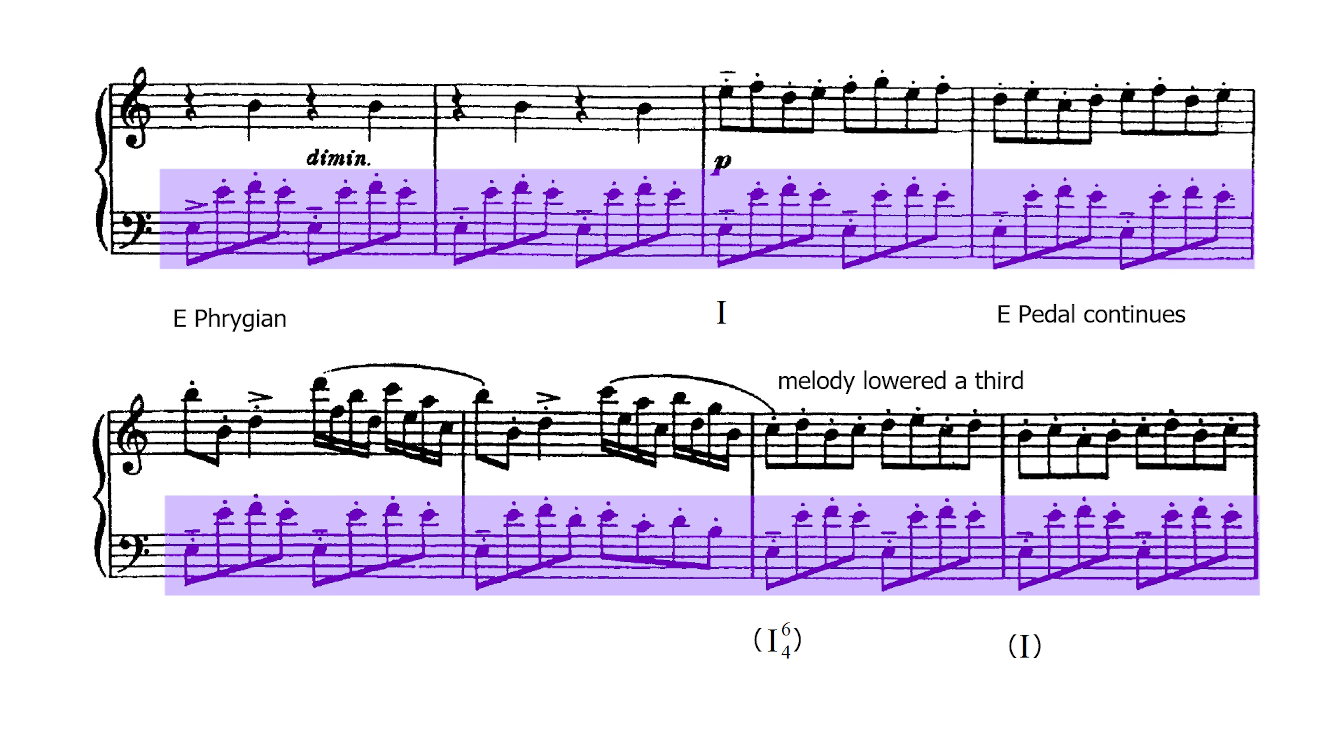Prokofiev introduces an Alberti bass-like accompaniment and a new melody. Notice how he creates contrast with the A section by indicating every note to be played in staccato. There is not a single note in the A section with a staccato indication. Also notice how the left hand now gets the accompaniment instead, while the right hand plays the main melody.